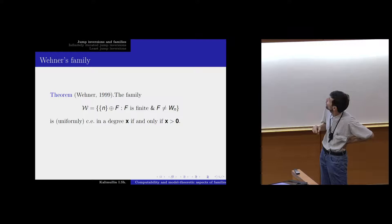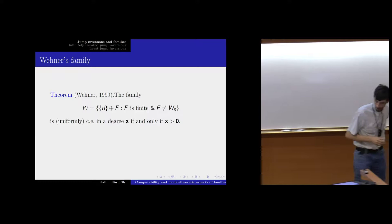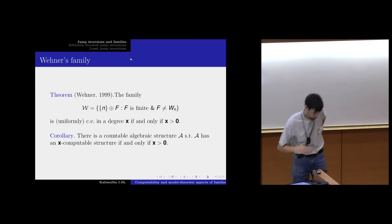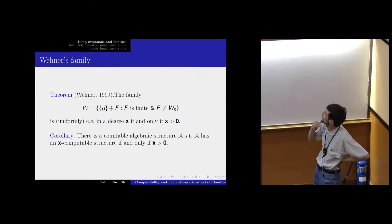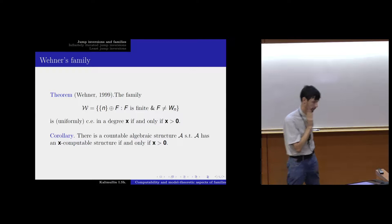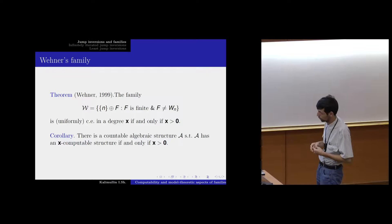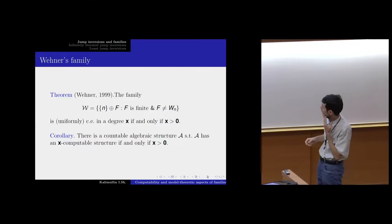I am staffed with this example of a family, which is CE in a Turing degree x if and only if x is non-zero. It gives an immediate corollary — which also belongs to, and was independently obtained by Ted Sleiman in the same year. It is an independent work of two mathematicians: that there is a countable algebraic structure which is computable if and only if the oracle is not computable.